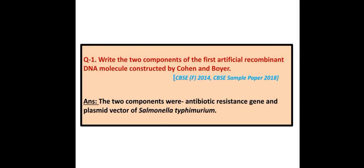Here is the first question. What are the two components of the first artificial recombinant DNA molecule constructed by Cohen and Boyer? Answer: The two components were an antibiotic resistance gene and a plasmid vector of Salmonella typhimurium.